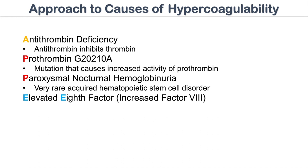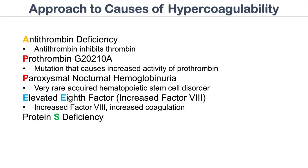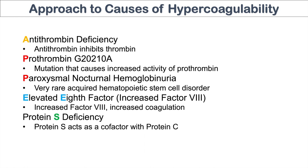The E in our mnemonic stands for elevated eighth factor — increased factor VIII — which leads to increased coagulation. The S stands for protein S deficiency. The liver makes both protein S and protein C; protein S is actually a cofactor with protein C, helping it function. Protein C inhibits both activated factor V and activated factor VIII. So if we have a deficiency in protein S, protein C won't function as well and won't be able to inhibit factor V and factor VIII as it should.